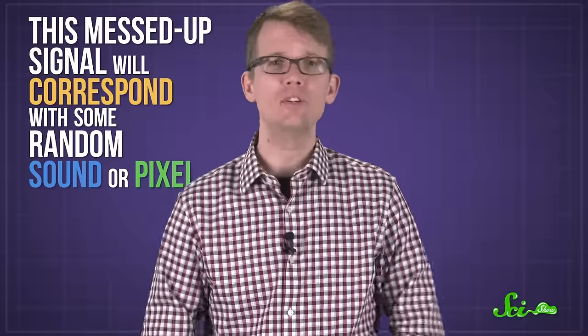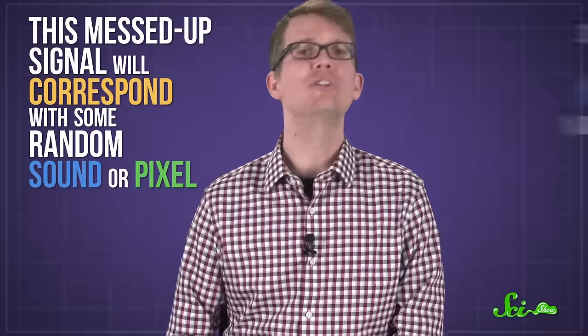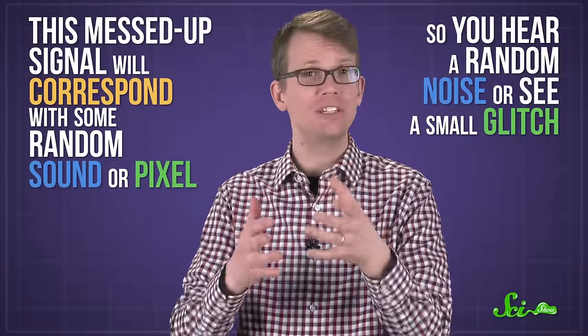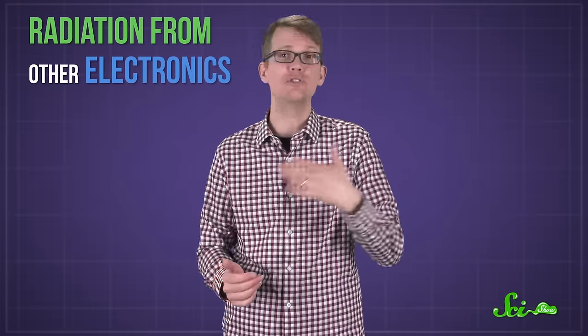The interference means your device ends up receiving a wave that's slightly offset from the original. This messed-up signal will correspond with some random sound or pixel, so you hear a random noise or see a small glitch. Even when there is no lightning, you still receive some noise from other sources, like radiation from other electronics or the radiation streaming out from the sun.